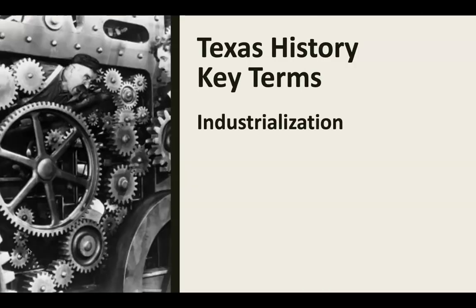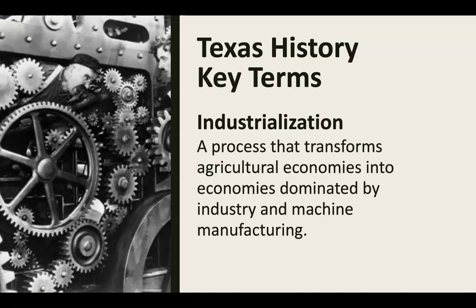Our next key term is industrialization. Industrialization is a process that transforms agricultural economies — meaning economies based on growing crops — into economies dominated by industry and machine manufacturing, factories, and products being built on assembly lines. So industrialization is the moving from farming to building things.